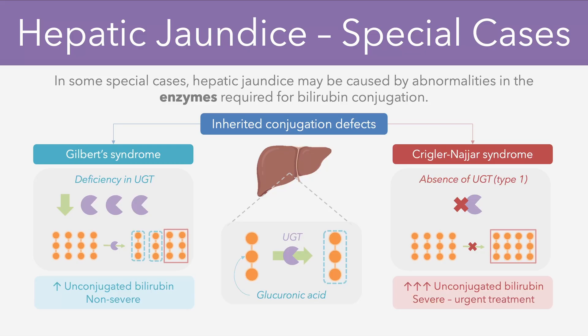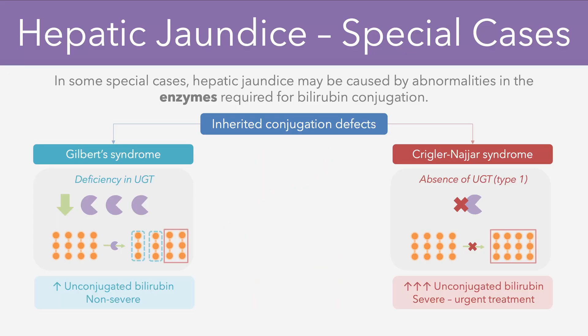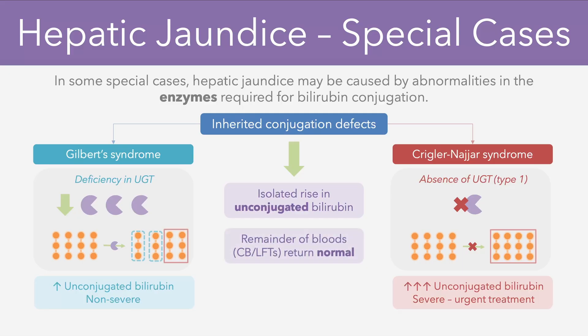To summarize the findings of these special cases, if you ever have a situation where there's an isolated rise in the unconjugated bilirubin levels, and all of the other bloods — the conjugated bilirubin and LFTs — return normal, it might point towards an inherited conjugation defect instead.